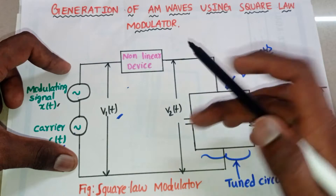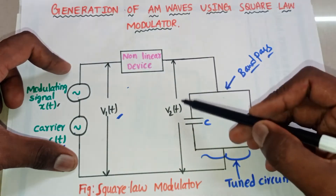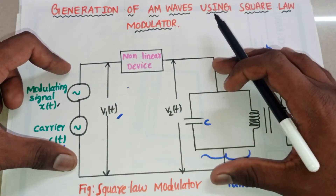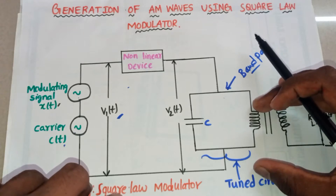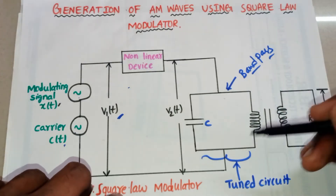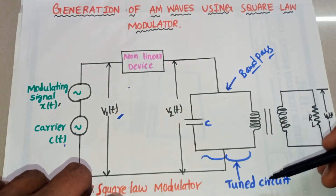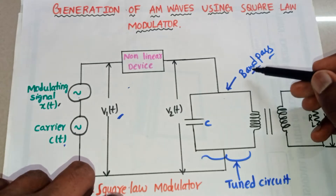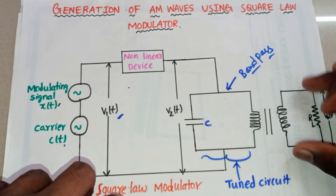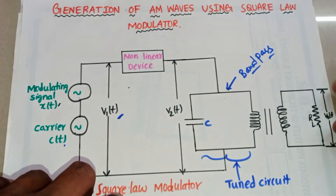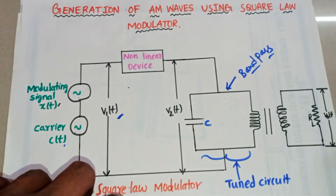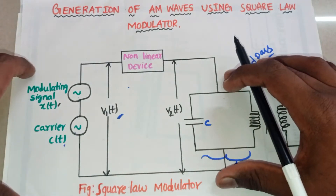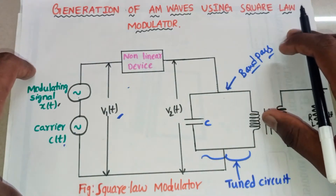The output of the non-linear device is V2(t). After the non-linear device, we have a tank circuit, which can also act as a band pass filter. After the band pass filter, we have the output V0(t). This is the circuit of the square law modulator.